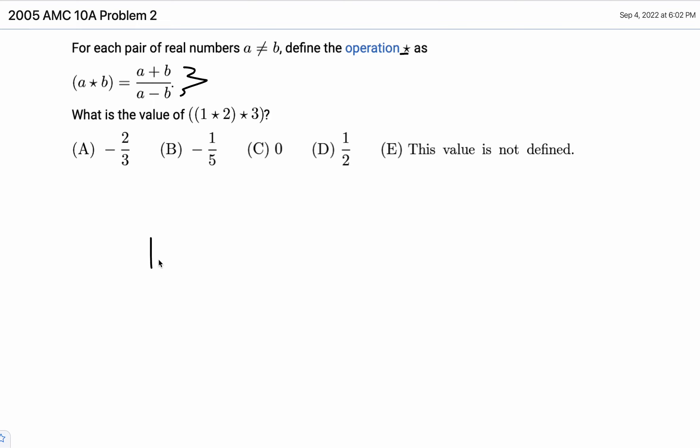So first, 1 plus 2 over 1 minus 2 is just 3 over negative 1 equals negative 3.